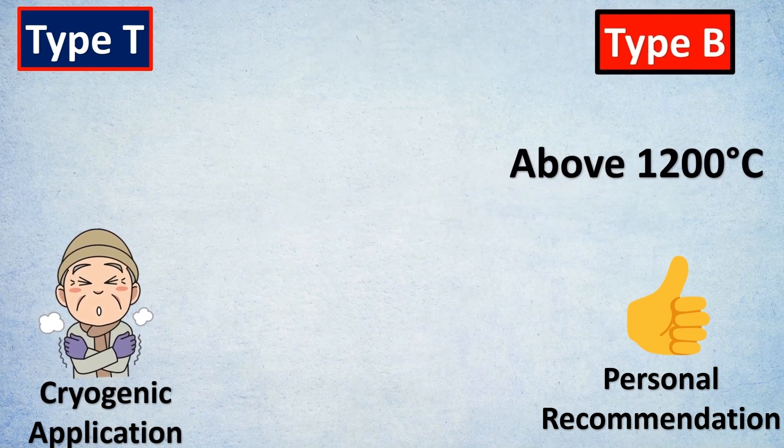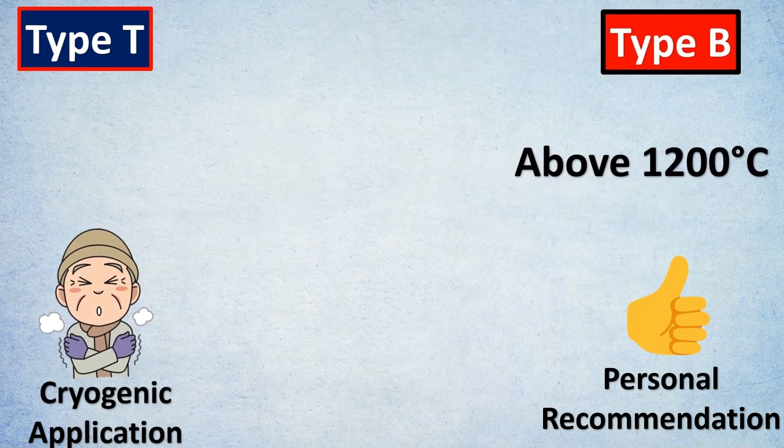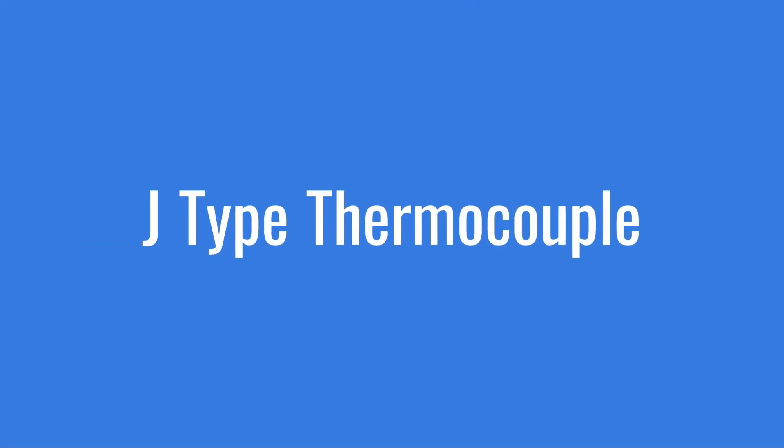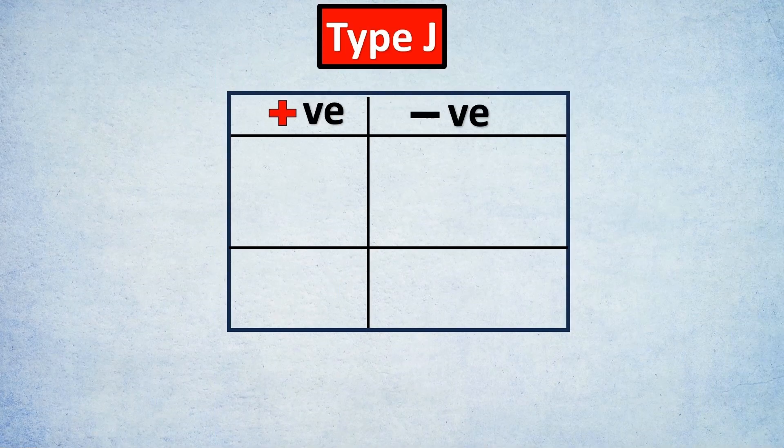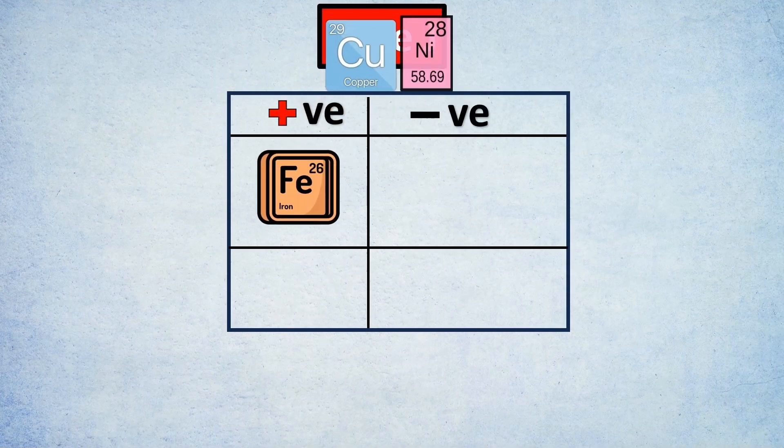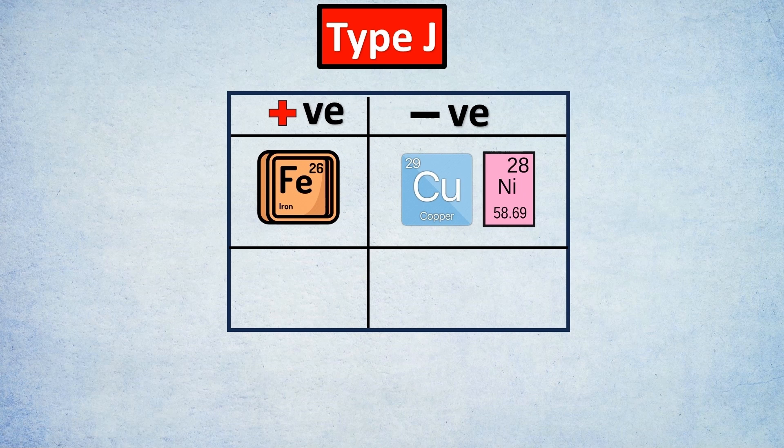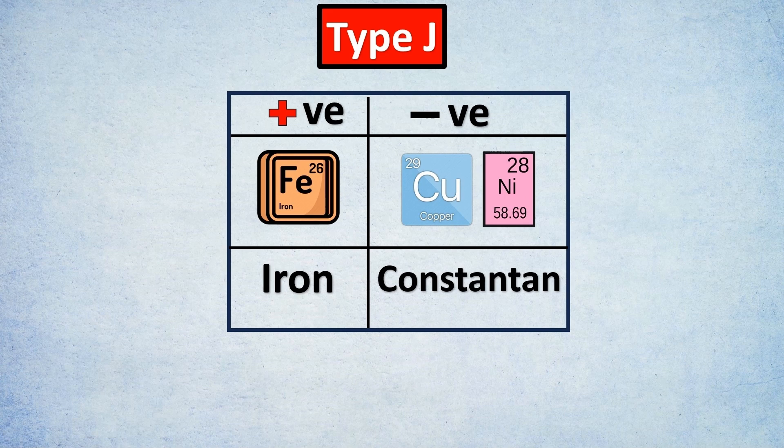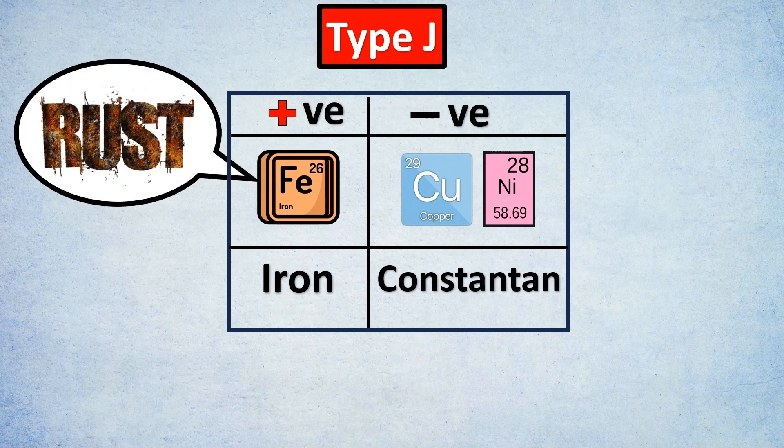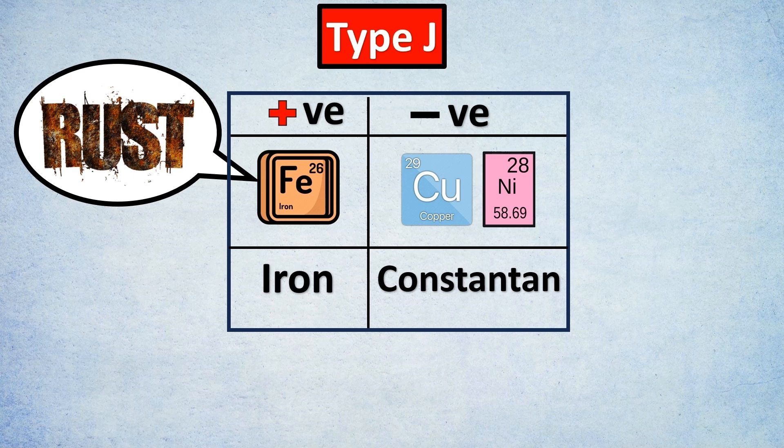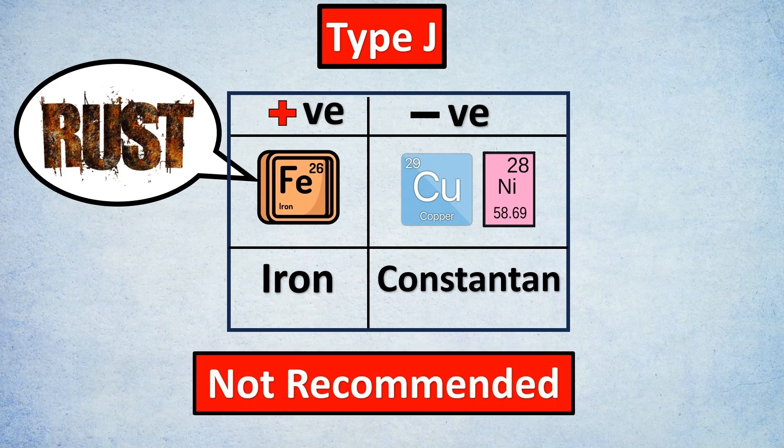One of the most important parts is Type J thermocouples. Type J has the positive section with iron and the negative section with constantan, which is copper and nickel. Remember that iron is very prone to rusting. As per API RP recommendation, this should be a legacy choice. Only if there's absolutely no choice available; otherwise, keep this as a non-recommended choice for majority of project applications.